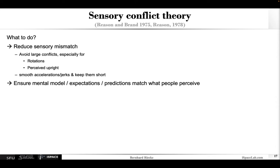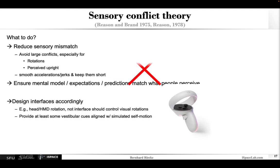And of course, also ensuring that the expectations, the mental model, and the predictions actually match what people perceive. There are also implications for the kind of interfaces you use. Most prominently, when you wear a head mounted display, you should really move your head to change or rotate the viewpoint, not any kind of controller. Basically, don't ever use a controller to rotate the view in VR unless there's really no other way. Another thing that can help is providing at least some vestibular cues that are aligned with the directional simulated self-motion.